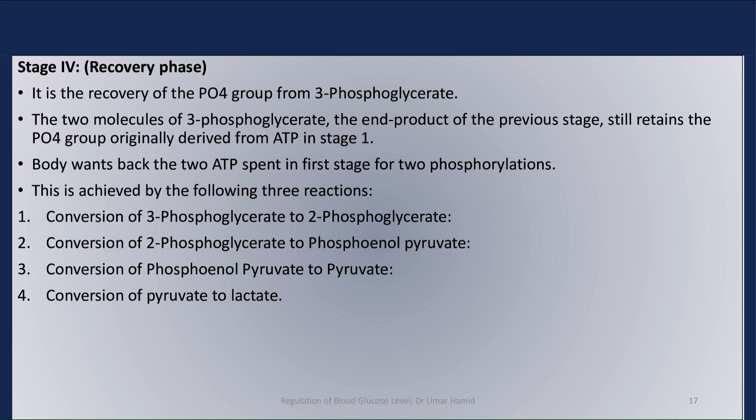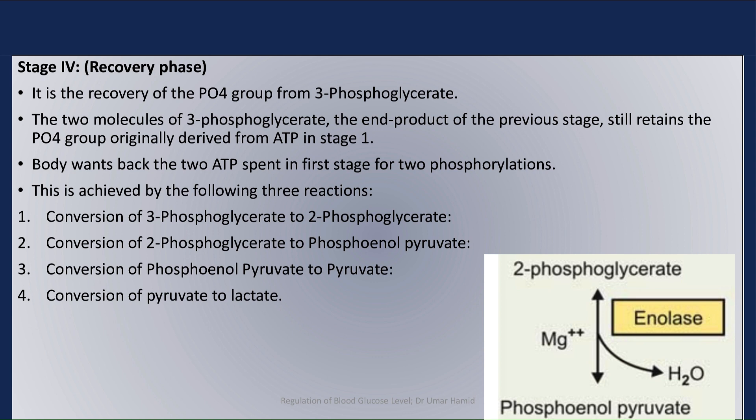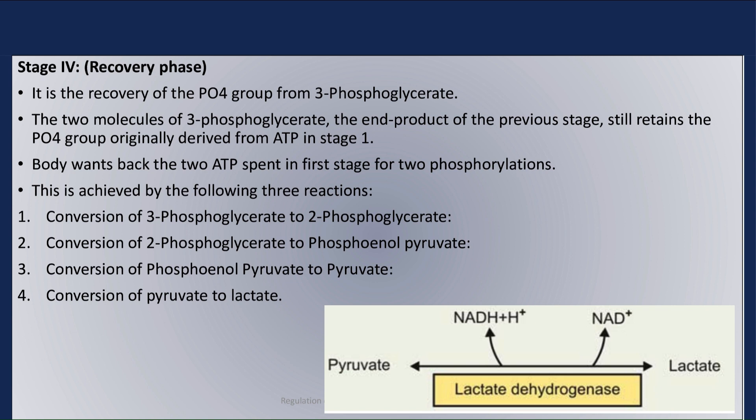This is achieved by the following steps: Step 1 is the conversion of 3-phosphoglycerate to 2-phosphoglycerate. Step 2 is the conversion of 2-phosphoglycerate to phosphoenolpyruvate. Step 3 is the conversion of phosphoenolpyruvate to pyruvate. Step 4 is the conversion of pyruvate to lactate.